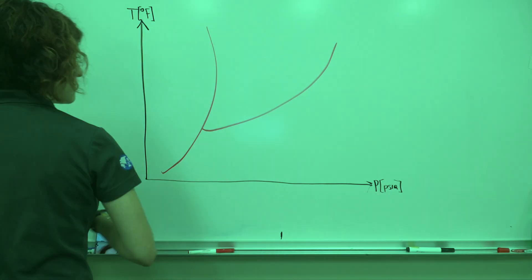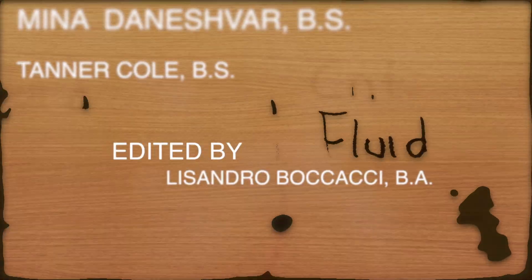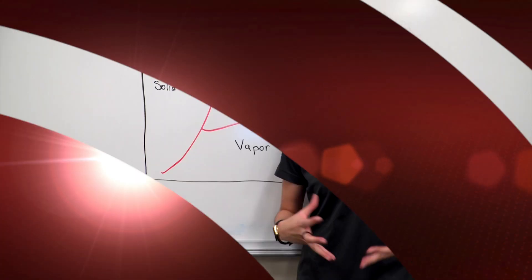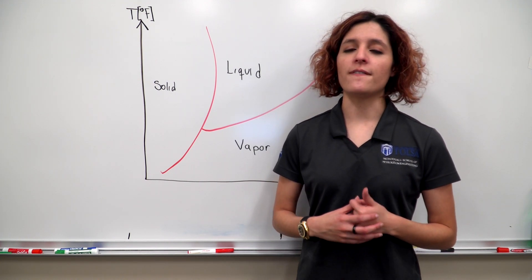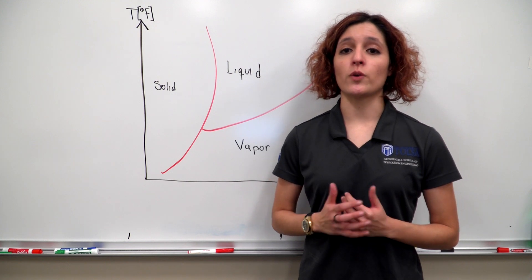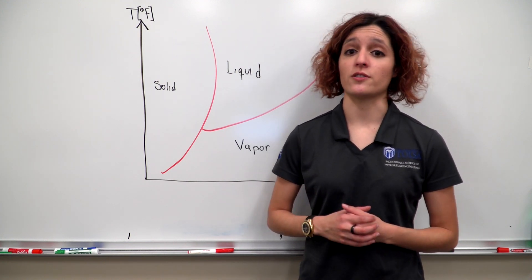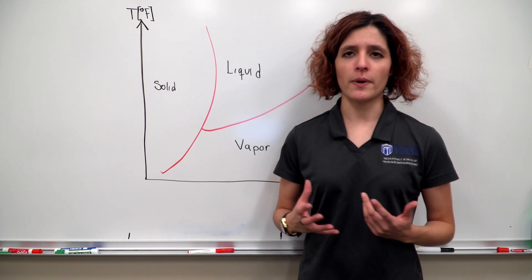A single element's phase, as well as other properties, are a function of pressure and temperature. A phase diagram shows which phase an element will be at under certain pressure and temperature conditions. Each phase diagram will vary based on the substance, but in general will carry this basic shape.